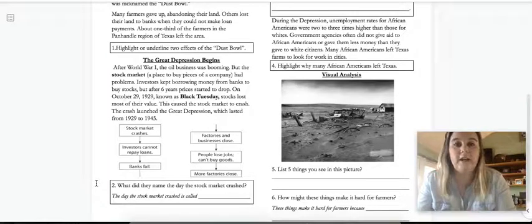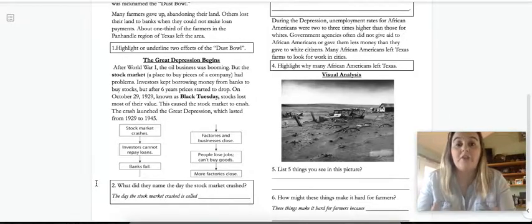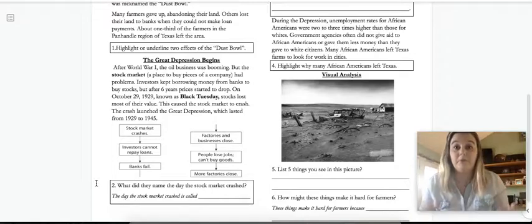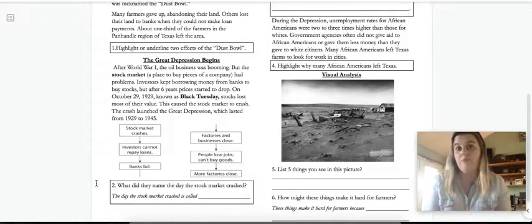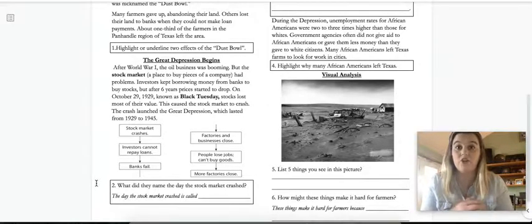On October 29, 1929, known as Black Tuesday, stock markets lost most of their value. This caused the stock market to crash, because these companies are losing money and so people start losing money. And so they start selling them. They're like, you know what, I'm just going to sell my little pieces now and hope to make some money back. But when everybody does that, then there's no one buying them. And so the companies are losing all this money and it caused it to crash.